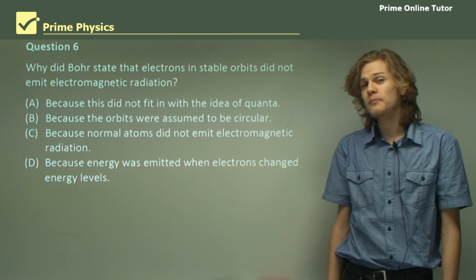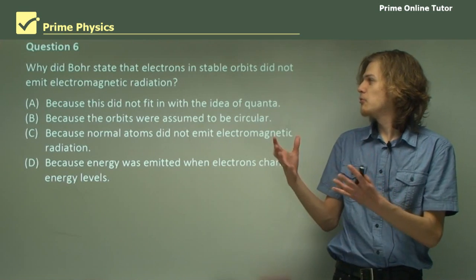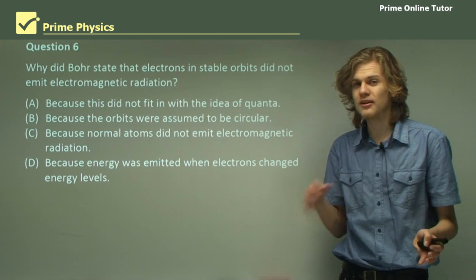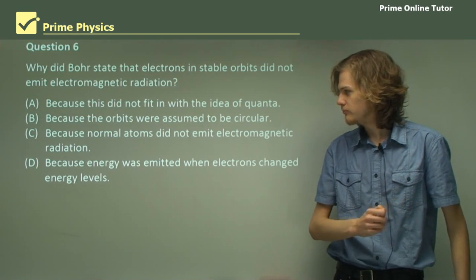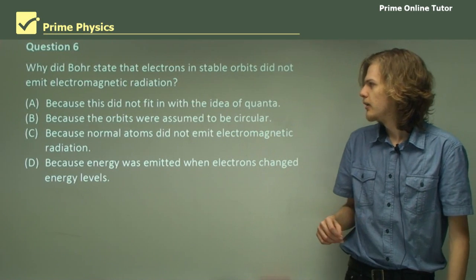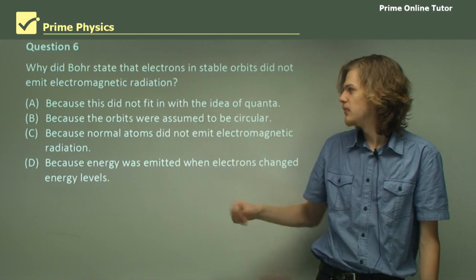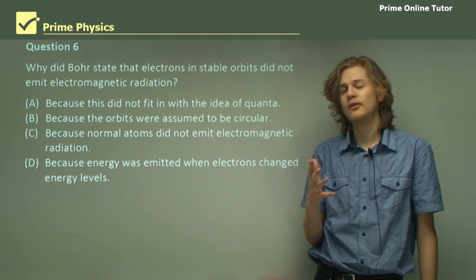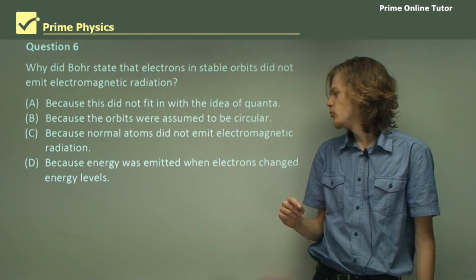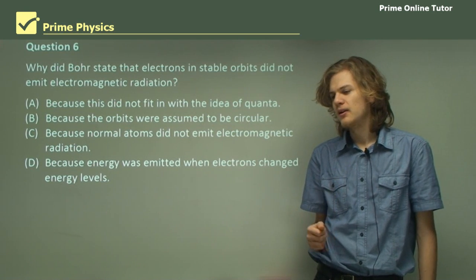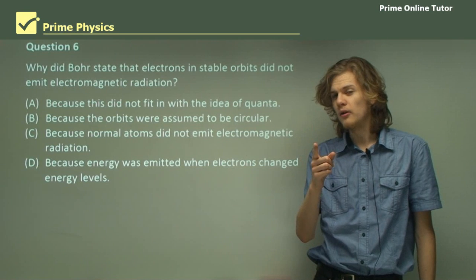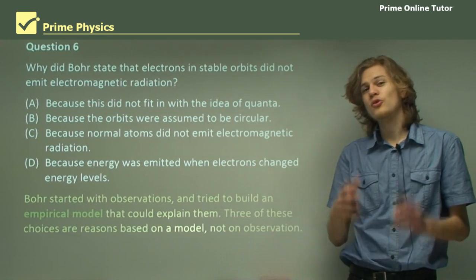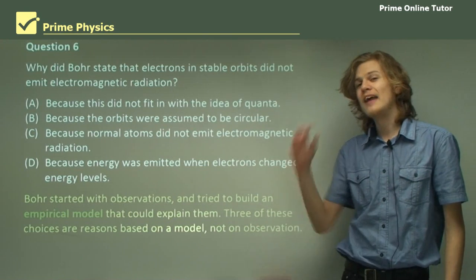Question 6. Why did Bohr state that electrons in stable orbits did not emit electromagnetic radiation? Because we know from our classical physics, of course, that accelerating charges do emit radiation. So we have a few options here. Because it didn't fit in with the idea of quanta. Because the orbits were assumed to be circular. Because normal atoms did not emit electromagnetic radiation. Or because energy was emitted when the electrons changed energy levels. Now it turns out, all of these, except for one, rely on an assumption.